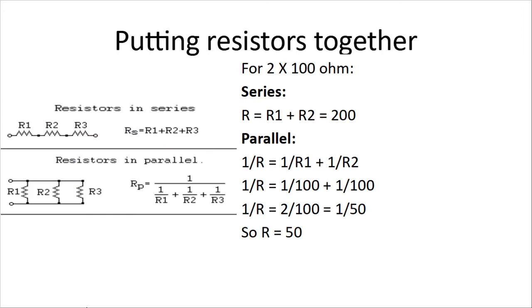When you put resistors together, if you line them up end to end, that's called series. Think of it as a water pipe where you're thinning the pipe for longer and longer — that creates a lot more resistance and restricts the flow. When they're in series, you just add up the values. So if I have R1, R2, R3, all 100 ohms, my total resistance is going to be 300 ohms.